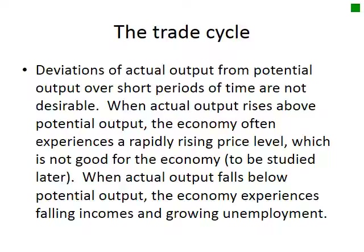Deviations of actual output from potential output over short periods of time are not desirable. Businesses and governments do not like lots of fluctuations. When actual output rises above potential output, the economy often experiences a rapidly rising price level, which is not good. When actual output falls below potential output, the economy experiences falling incomes and growing unemployment — also not good.